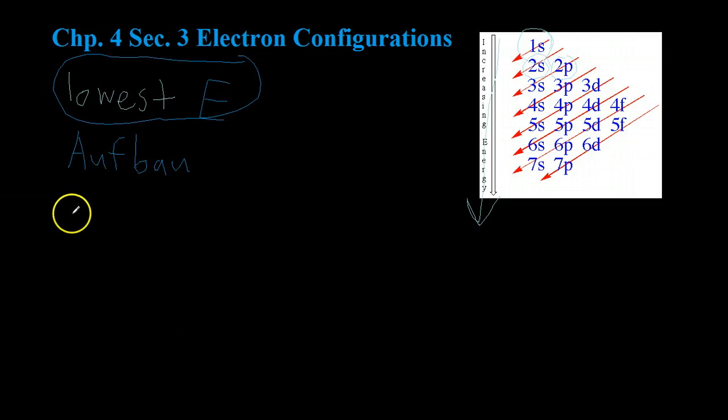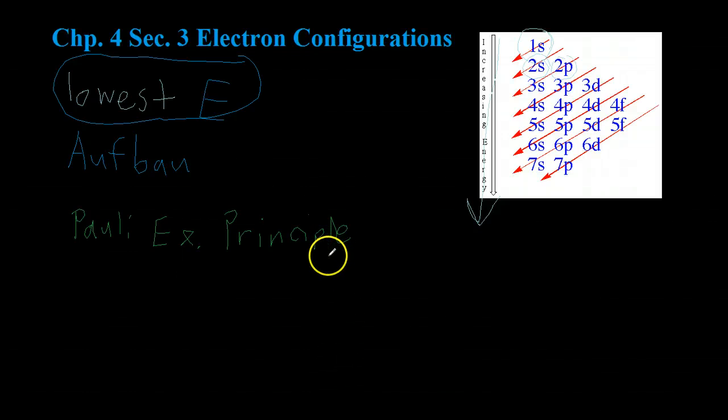The next rule is something called the Pauli Exclusion Principle, which is something you find in both chemistry and physics. And what the Pauli Exclusion Principle says is that no two electrons in the same atom can have the same four quantum numbers. And basically what that means is that two electrons that are in the same orbital, for example, this 1s orbital, have to have opposite spins because their other three quantum numbers are the same. So let's say one has a spin of one-half. That means the other electron in that orbital has to have a spin of negative one-half.